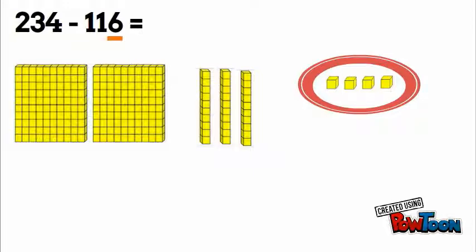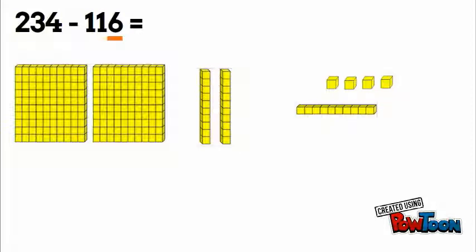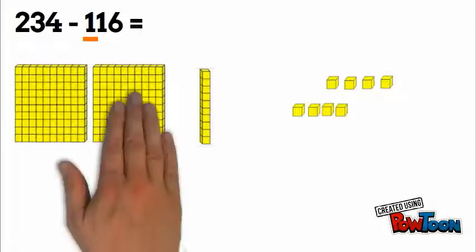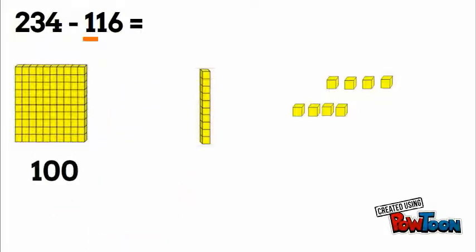So we're gonna take or borrow from one of our tens and unbundle it into ten ones. Now we have enough to take away six ones. Take six away. Now we can take away one ten and we take away 100. We're left with 100, one ten, and eight ones, so our answer is 118.